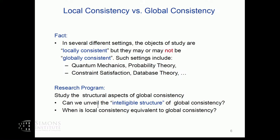This has given rise to a research program whose goal is to understand the structural aspects of global consistency. To use a nice phrase from Samson Abramsky: can we unveil the intelligible structure of global consistency? And in particular, when is local consistency equivalent to global consistency?